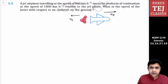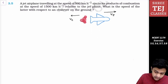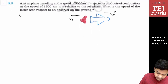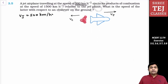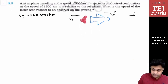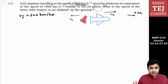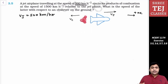Question 3.5: A jet airplane traveling at a speed of 500 km per hour — so Vj is equal to 500 km per hour. We are considering the right direction as positive. It ejects its products of combustion at a speed of 1500 km per hour relative to the jet plane. So the ejection is 1500 km per hour relative to the jet plane.